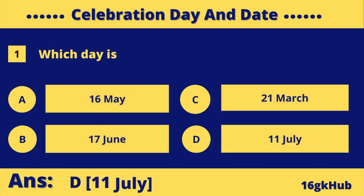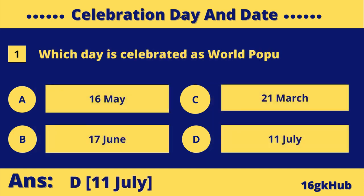Which day is celebrated as World Population Day? Option A: the 16th of May. Option B: the 17th of June. Option C: the 21st of March. Option D: the 11th of July. The correct answer is Option D: the 11th of July.